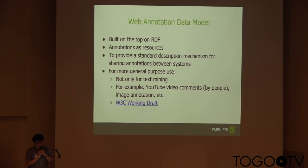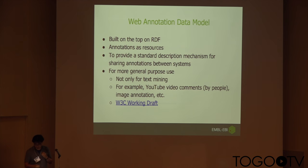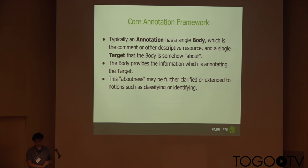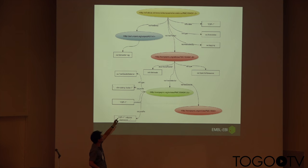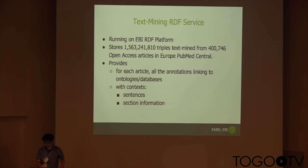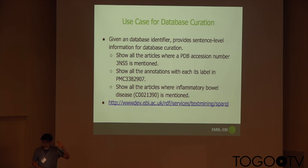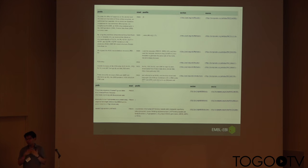We are using the web annotation model, which is built on RDF. This is a W3C working draft and more and more companies and academics are adopting it. There are annotation body and target components — the target is what you are annotating, and the body is about that target. This is the model for our mined identifications: you have a URI for the annotation, it tells you which article the identifier was found in and what it is about, and we link URIs for other databases. We have an RDF triplestore running on a SPARQL endpoint that you can test. For a given accession number, you will get the full sentence where the number is mentioned.